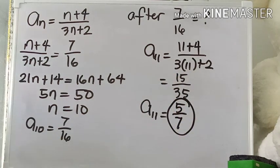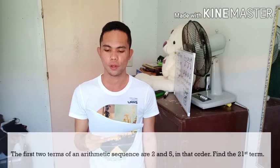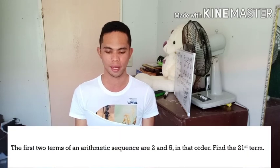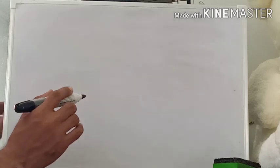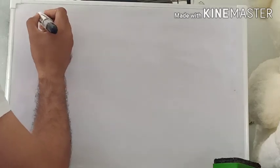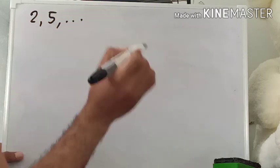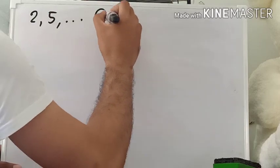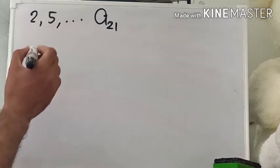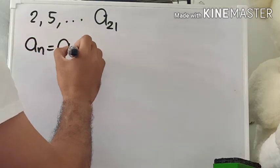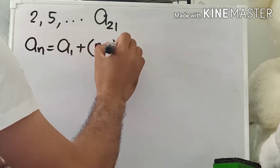The solution to the first problem is 5 over 7. For our second problem, which is easier: the first two terms of an arithmetic sequence are 2 and 5, in that order. Find the 21st term. The formula for finding the nth term is a sub n = a sub 1 plus the quantity (n minus 1) times the common difference.